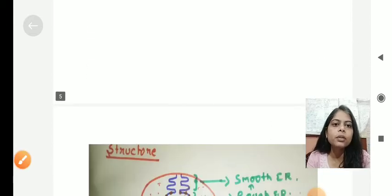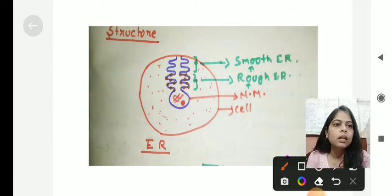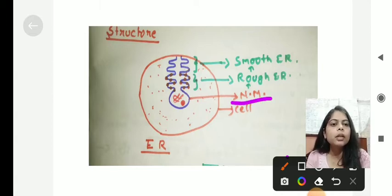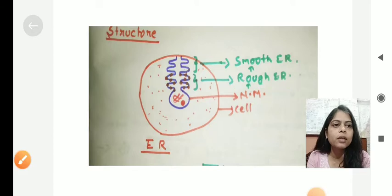Here we can see that the endoplasmic reticulum — both rough and smooth — has originated from the nuclear membrane. The rough endoplasmic reticulum has ribosomes attached to it, which is why it appears rough in nature.